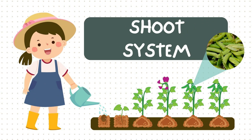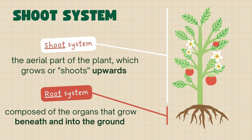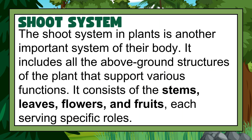Shoot System. The shoot system is the aerial part of the plant, which grows or shoots upward, while the root system is composed of organs that grow beneath and into the ground. The shoot system in plants is another important system of their body. It includes all the above-ground structures of the plant that support various functions. It consists of the stems, leaves, flowers, and fruits, each serving specific roles.